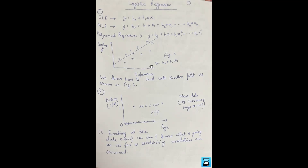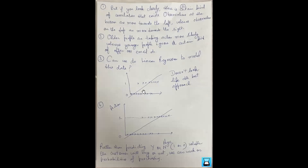In the case of logistic regression, we are talking about data that pertains to yes or no kind of answers. If age is there and some action is to be performed based on age — for example, studying whether a customer will purchase a product or not depending on age — it is a yes or no decision. It is very difficult to model this data using simple linear regression, so fitting a line doesn't look like the best approach.